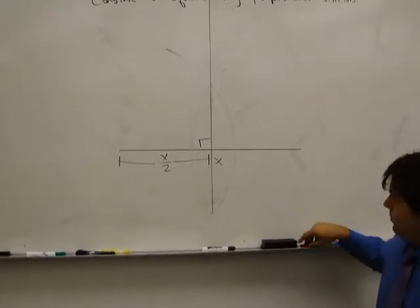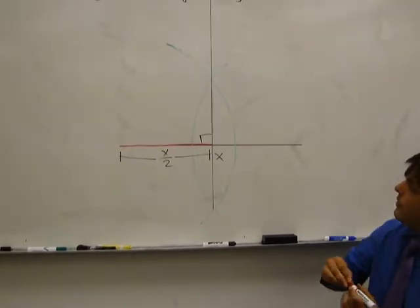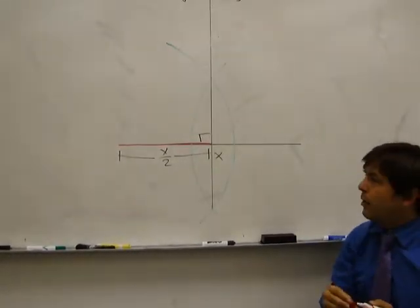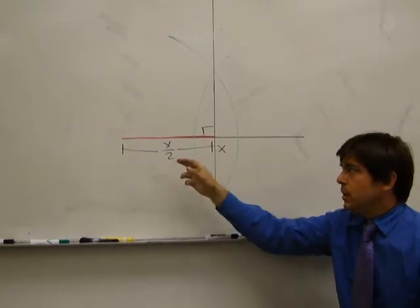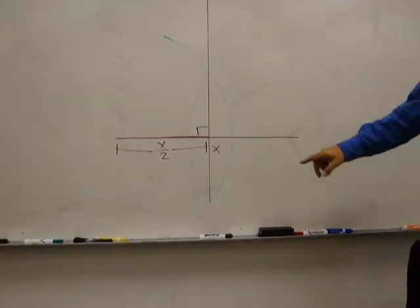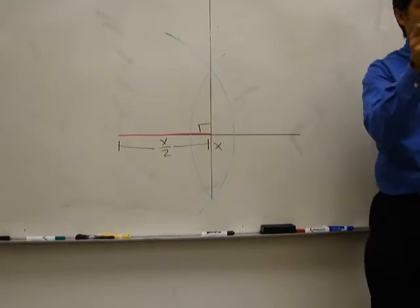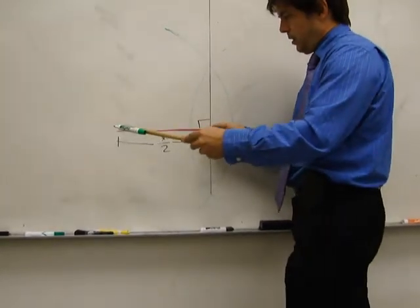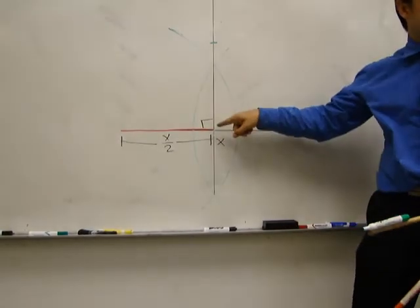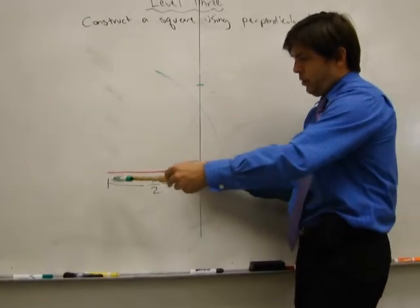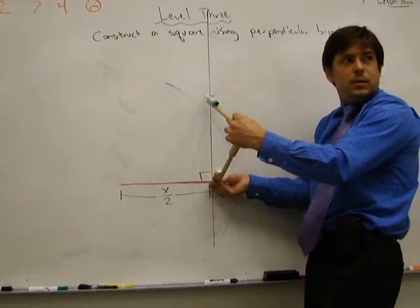So this is going to be the first side of our square. Obviously, the next side of our square is going to go up this way. So how long will every side of the square be? X over two. So without using a ruler, how can we tell how long X over two is right here? Without a protractor, what we'll use is a compass. Here's what we do. We go to the vertex, we go to the end point, and you measure. That's X over two. You don't have to actually draw the arc. But see, if that's the distance with the compass, then that's the same distance.